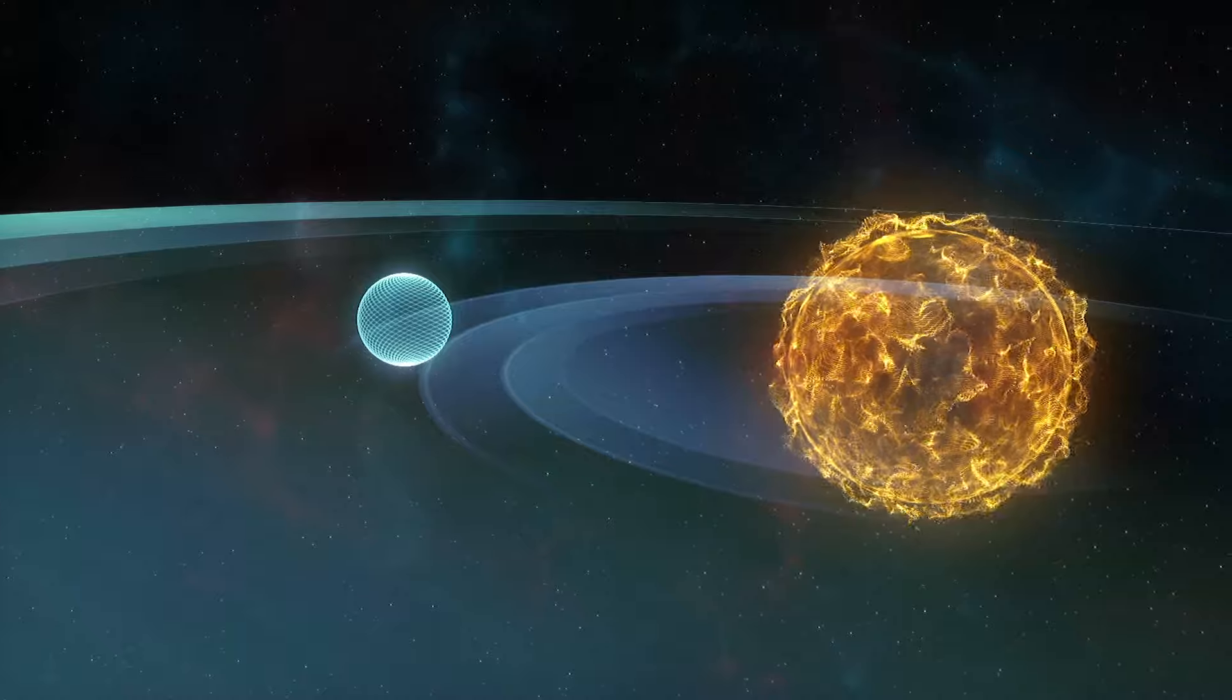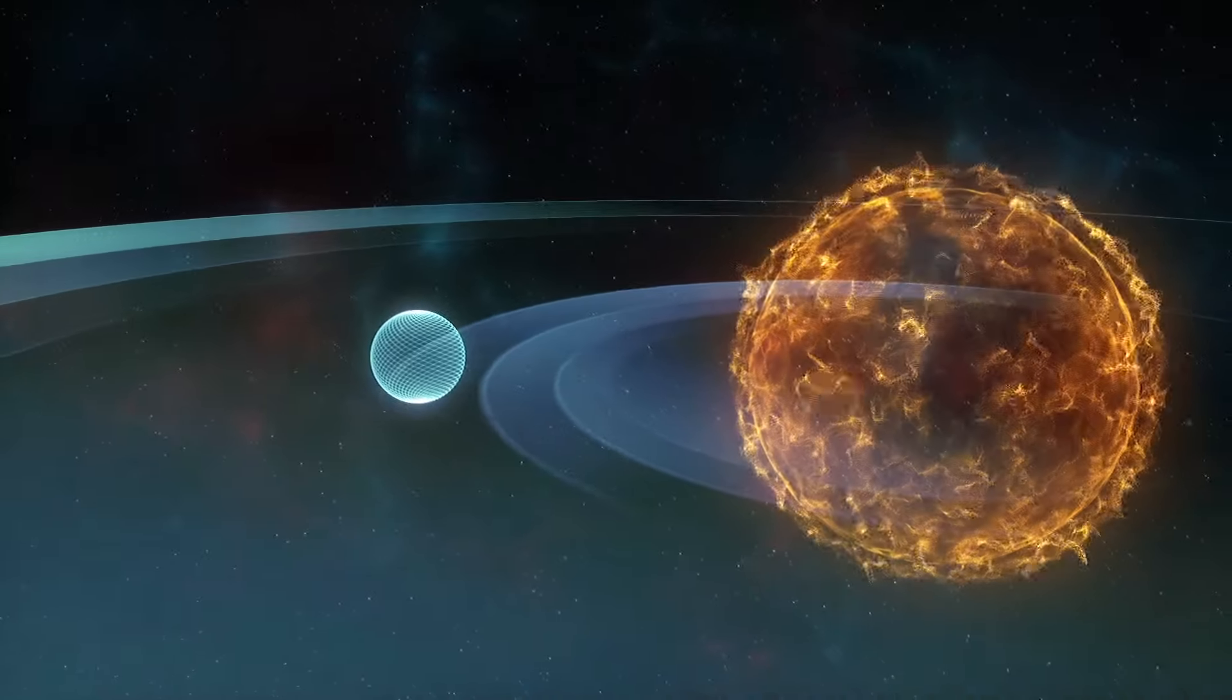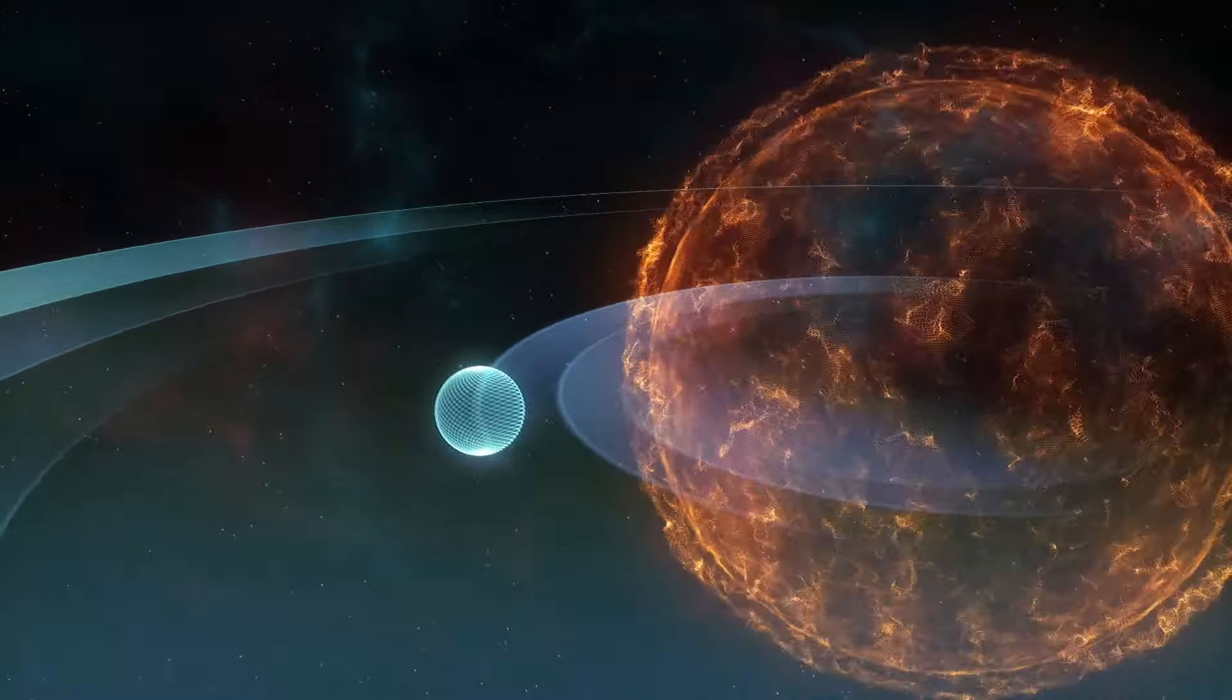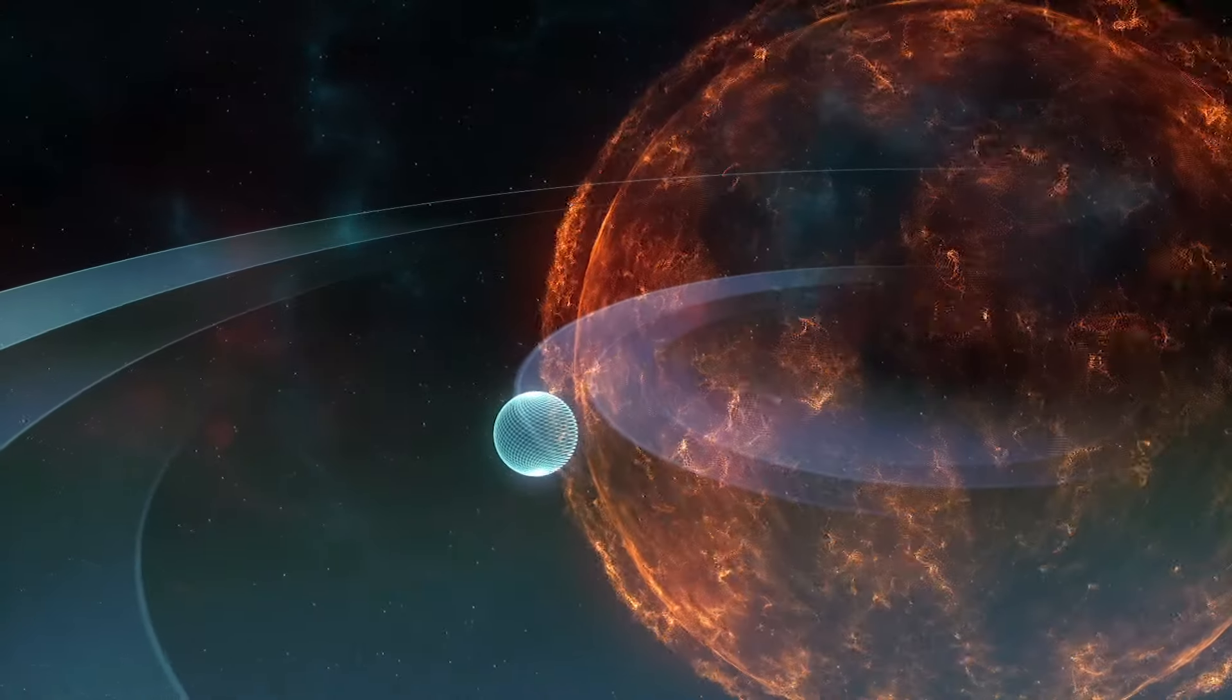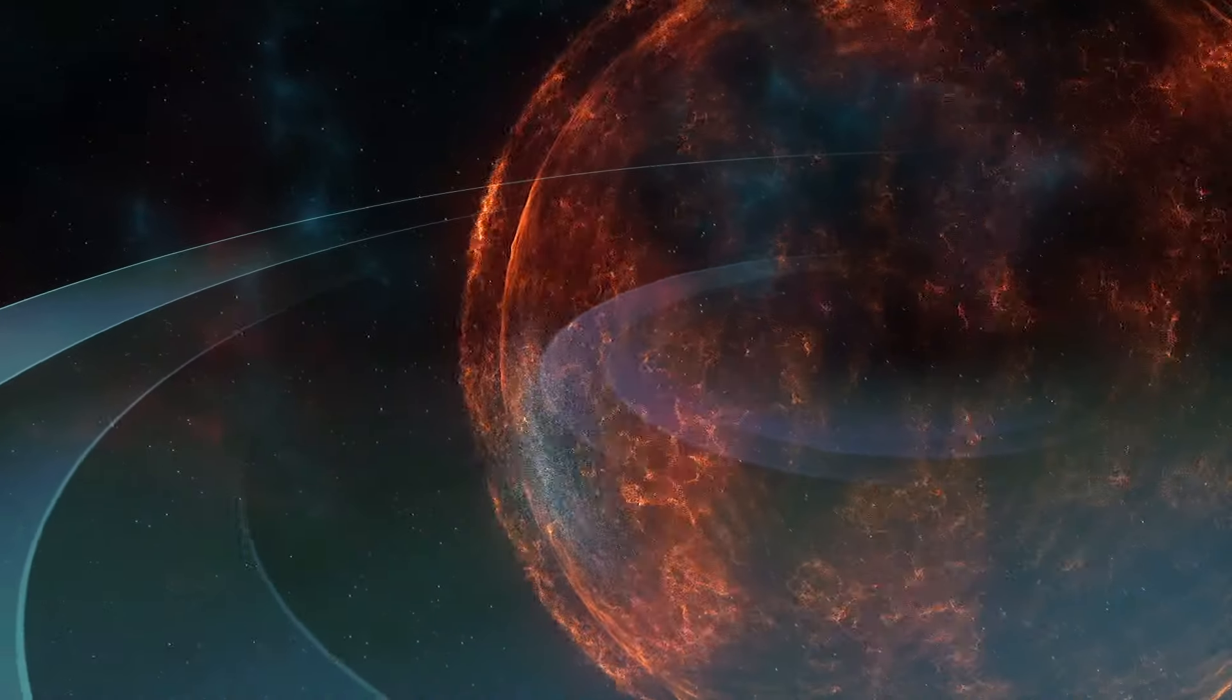When a star like the Sun, or with an initial mass of up to three or four solar masses, has burned off all of its hydrogen fuel, it expands to become a red giant.